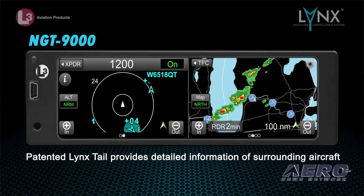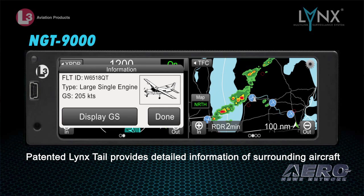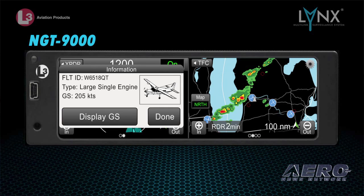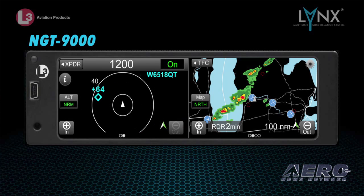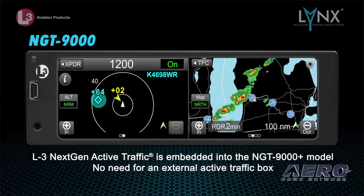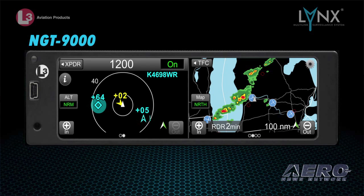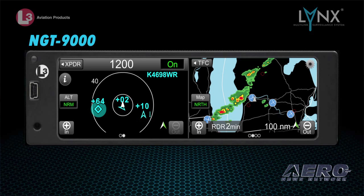you can slide that screen with a touch of a finger over to the left and it brings up a traffic page. In our airplane we have TAS enabled, so we see TIS-B traffic, ADS-B traffic, ADS-R traffic, and we also see active traffic. That's beneficial on takeoff — if you're not in ADS-B coverage, you'll see the active traffic that may or may not be out there in the pattern.